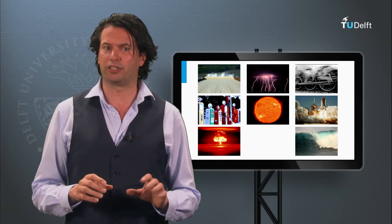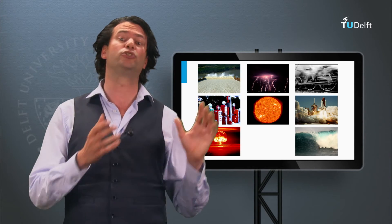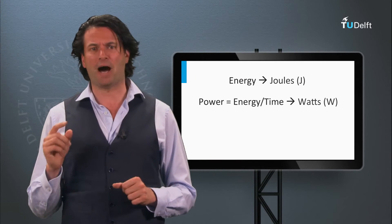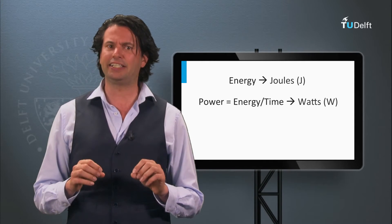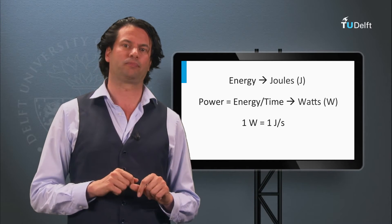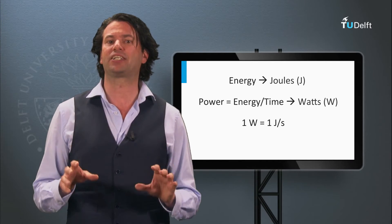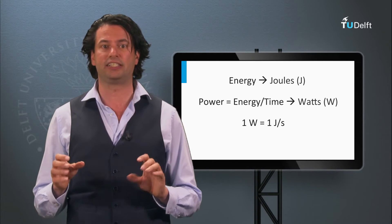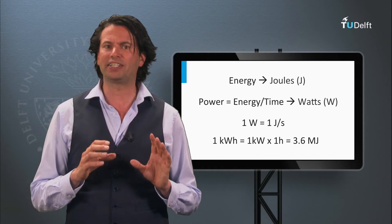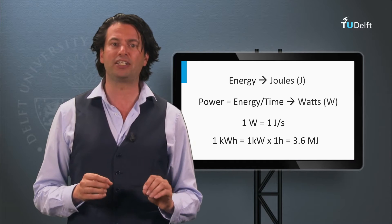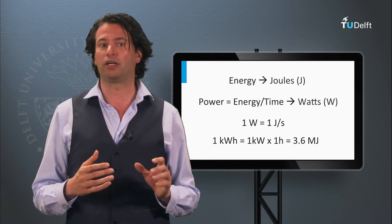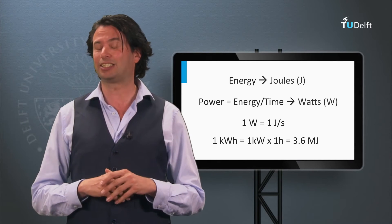An example is the electric motor — a tool in which we convert electrical energy into mechanical energy. The unit of energy is the joule. Power is the energy per time and is expressed in watts. One watt is one joule per second. In this course we will use a more practical unit, generally used to express electrical energy: kilowatt hours. One kilowatt hour equals the energy of a power of one kilowatt being used for one hour, which equals 3.6 million joules.